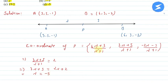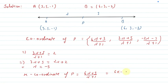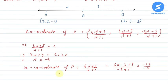Now to find the x-coordinate, we'll put the value of λ. X-coordinate of P is equal to (6λ+3)/(λ+1). Putting λ = -3: (6×(-3)+3)/(-3+1) = (-18+3)/(-2) = -15/-2, which equals 15/2.